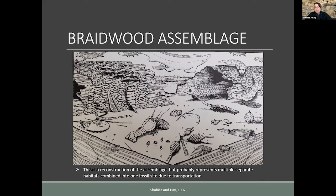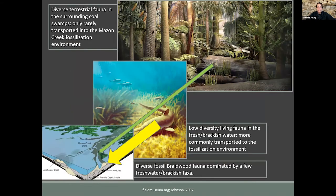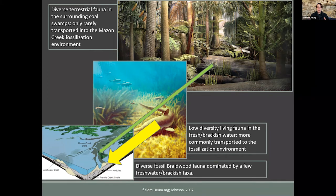The Braidwood assemblage probably has a low-diversity living fauna nearby in brackish to fresh water, which is more commonly transported to the fossilization environment, while purely freshwater or terrestrial things living farther away require transport over longer distances. This results in a diverse fossil Braidwood fauna very heavily dominated by a few freshwater to brackish water taxa.